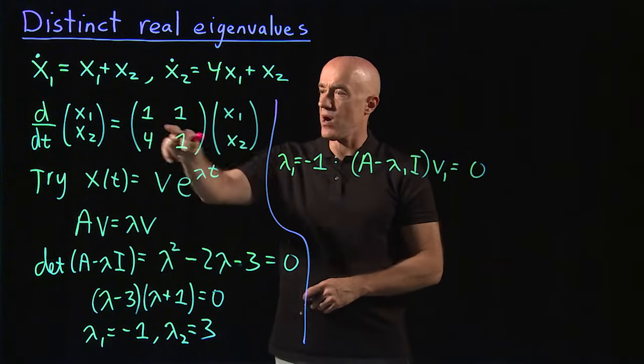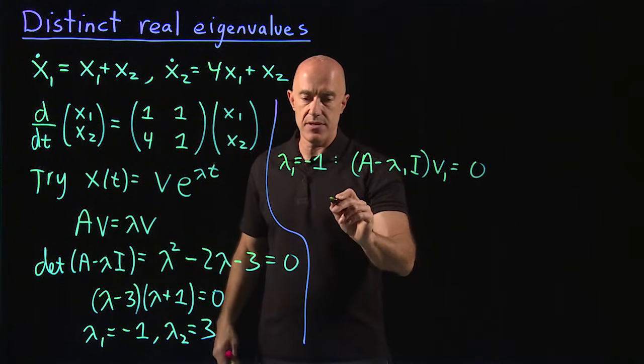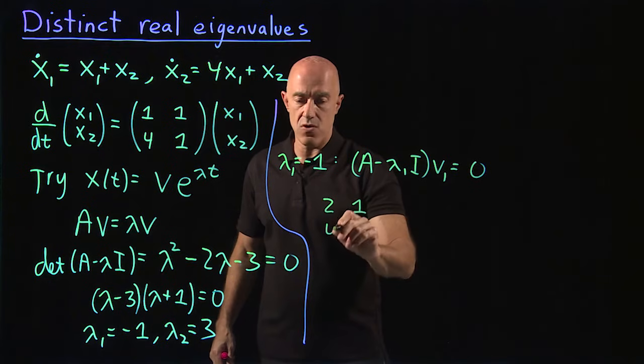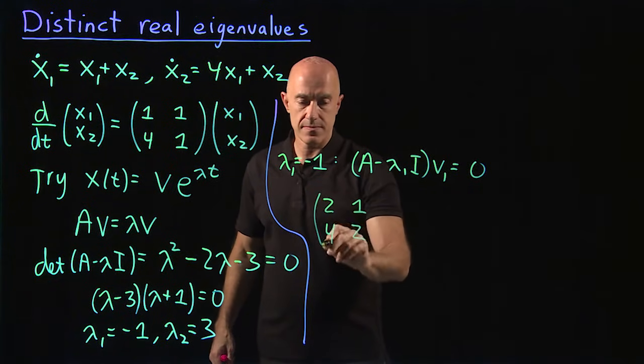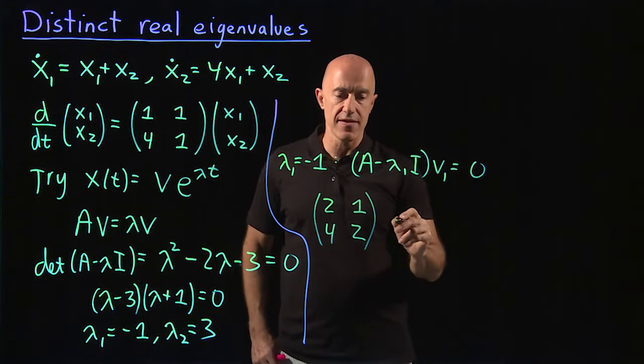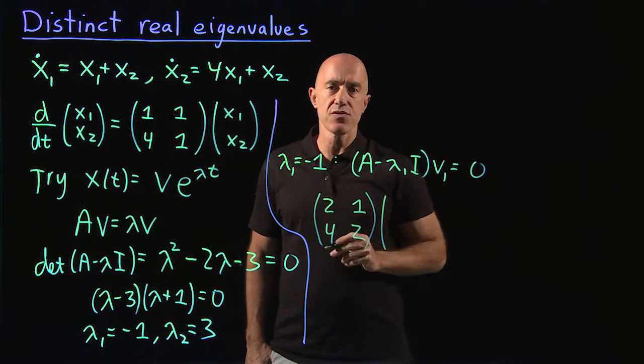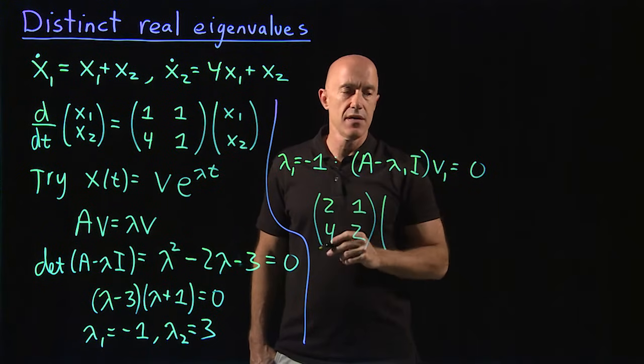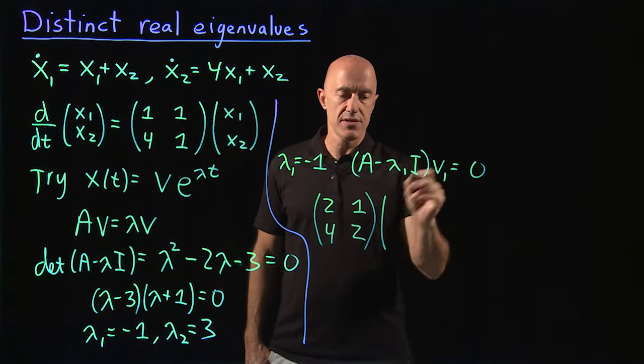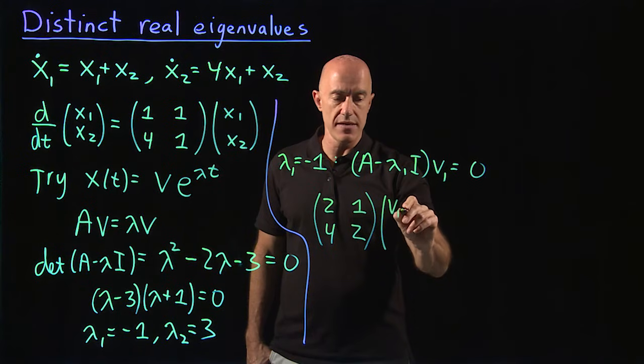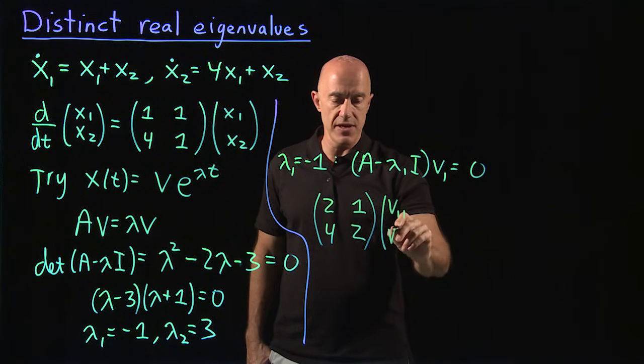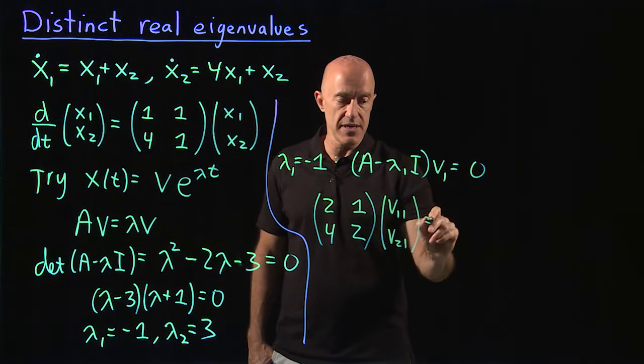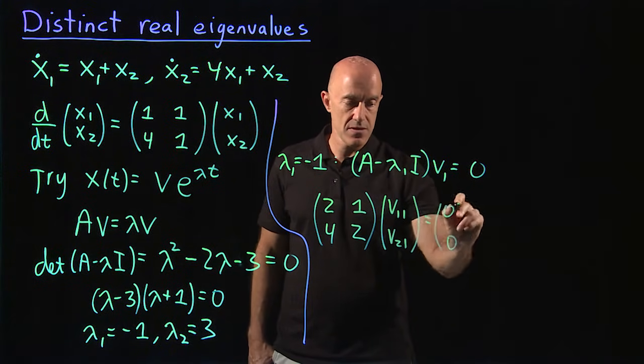So that means we add 1 to the diagonal elements. So this is 2, 1, 4, 2 times the first eigenvector. I like to write the first eigenvector as the first column of a 2 by 2 matrix. So I'll write that as v row 1, column 1, v row 2, column 1. And that's supposed to be equal to the 0 vector.